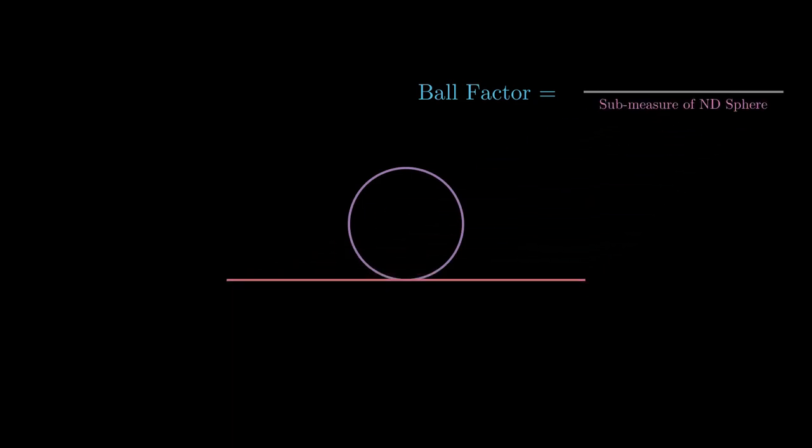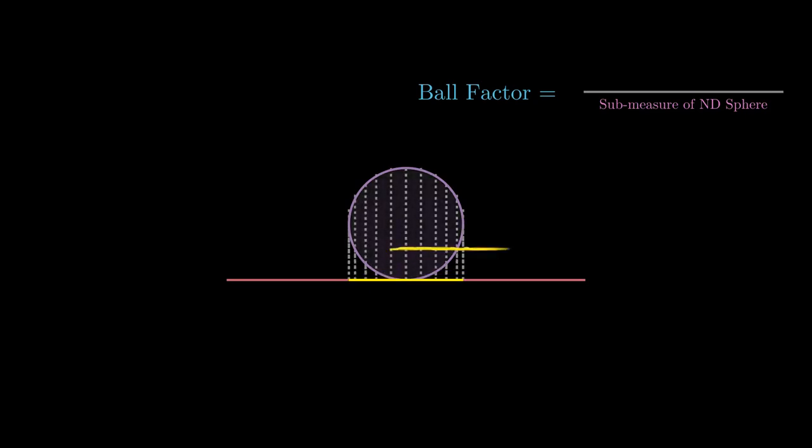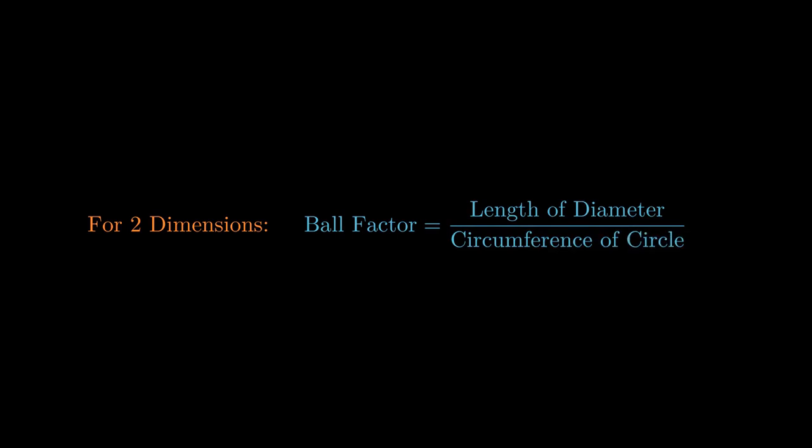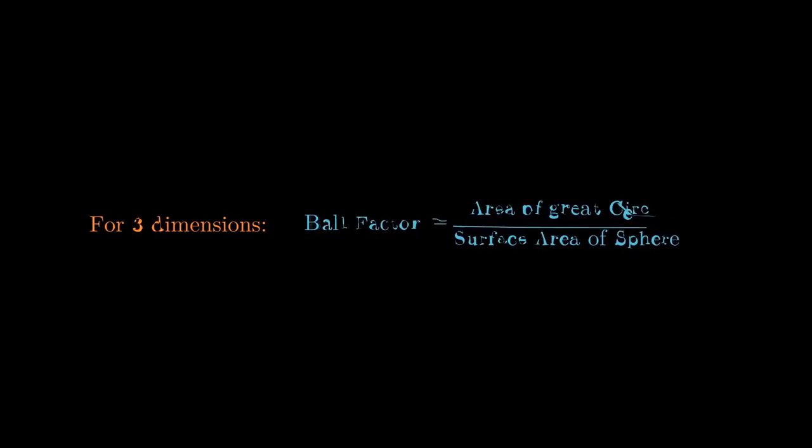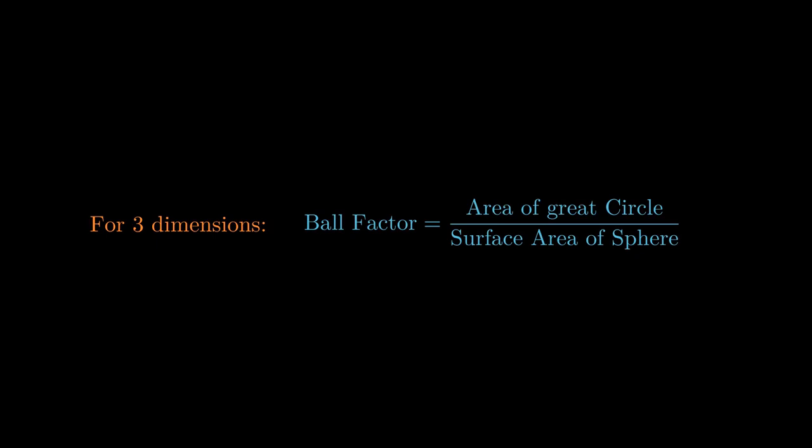The sub-measure, for example of a sphere, is the surface area of the sphere. Let's go deeper to understand what ball factor actually represents, shall we? If we are talking about two dimensions, the ball factor is the ratio where the denominator represents the circumference of the circle and the numerator represents the projection of the circle in one dimension. So therefore, ball factor in two dimensions equals length of diameter divided by circumference of the circle. And for three dimensions, the ball factor equals area of the great circle divided by surface area of the sphere. I hope that helped with getting a little more visual appeal to the ball factor.